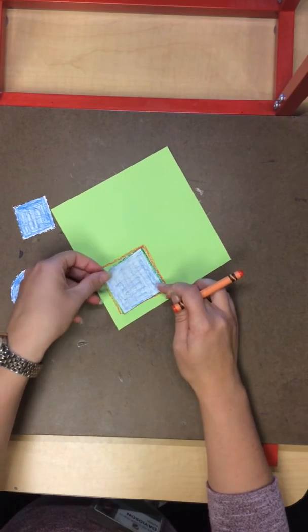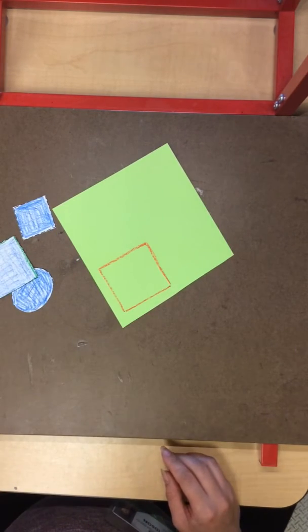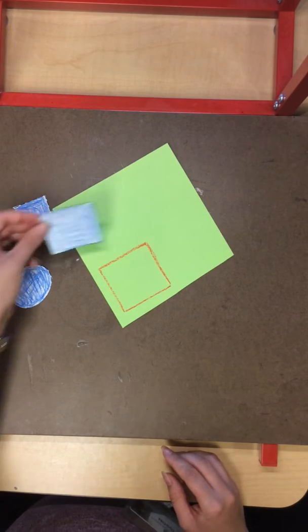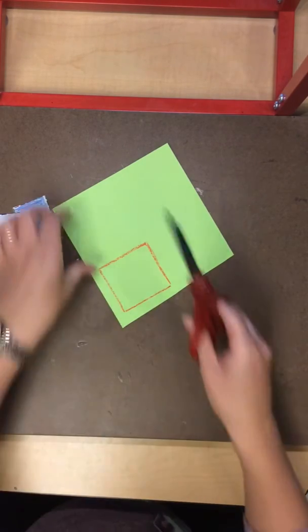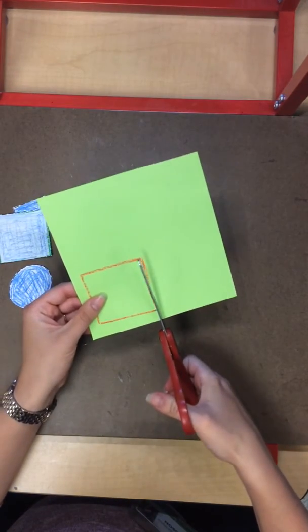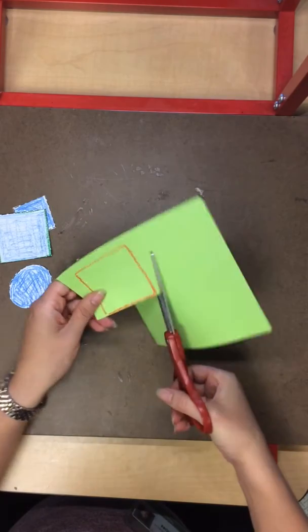Now since I used my tracer to help me, my square turned out really nice. If it didn't turn out so nice, I can always try again in another spot. So now I can take my scissors, cut out my new colorful construction paper shape.